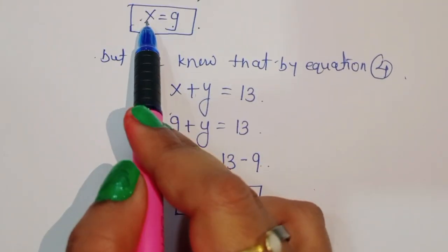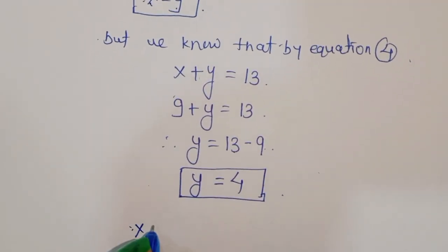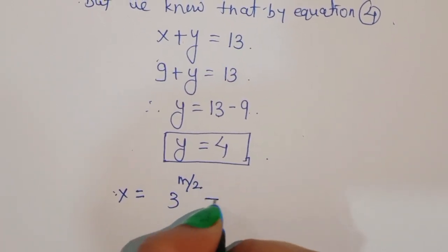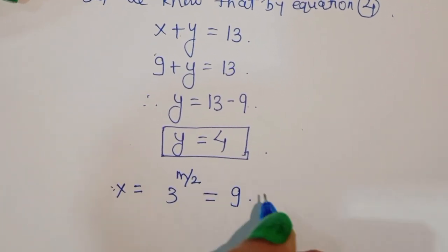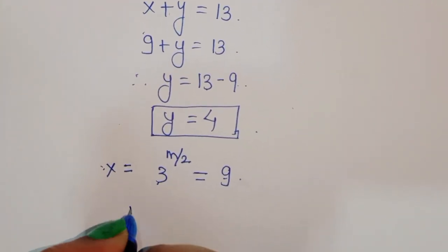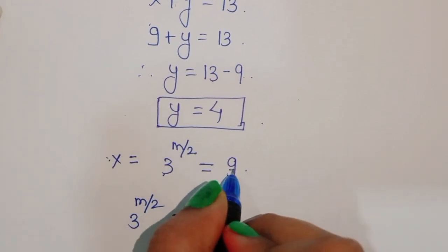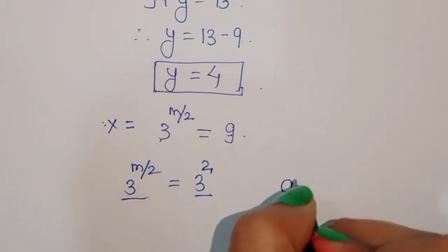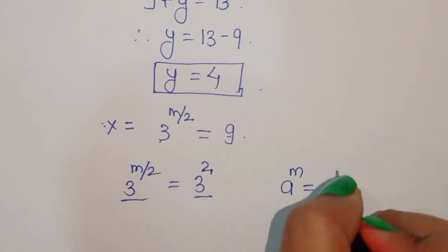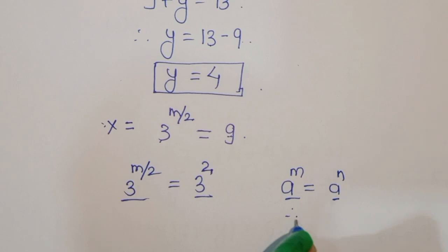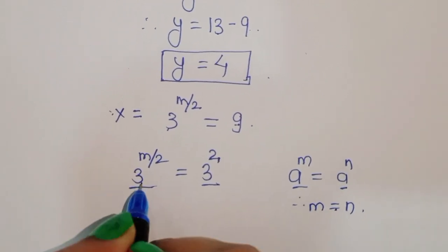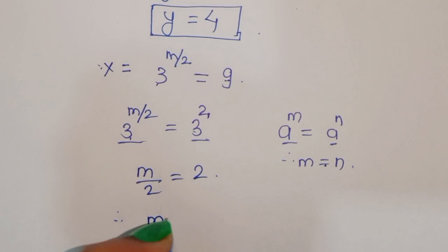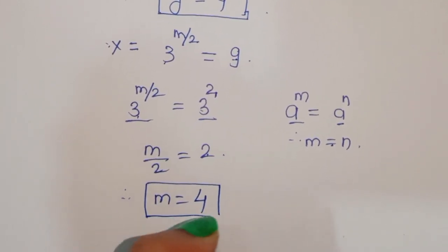Now, we assumed x equals 3 power m/2 (equation 1), and we got x equals 9. So 3 power m/2 equals 9, which equals 3 squared. Since the bases are the same, we can equate the exponents using the formula: if a^m equals a^n then m equals n. Therefore m/2 equals 2, so m equals 2 times 2, which is 4. The value of m is 4.